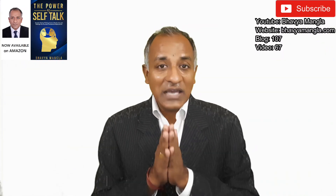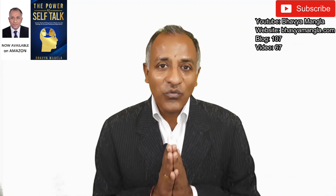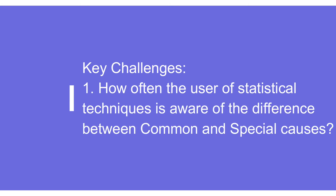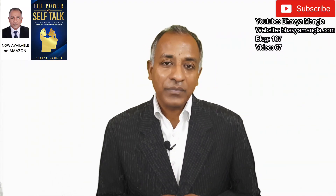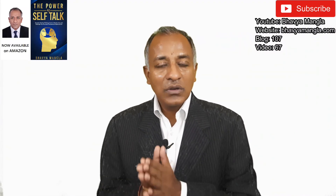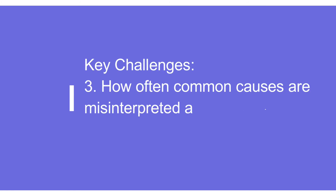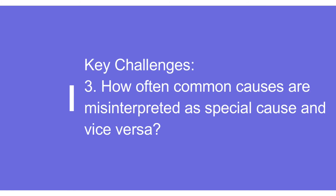Key challenges the industry faces regarding common and special causes include: first, how often people working in industry are clear about the difference between common cause and special cause; second, when plotting control limits and calculating Cp and Cpk, how often we remove special causes before doing the calculation; and third, how often we mix up common cause and special cause.